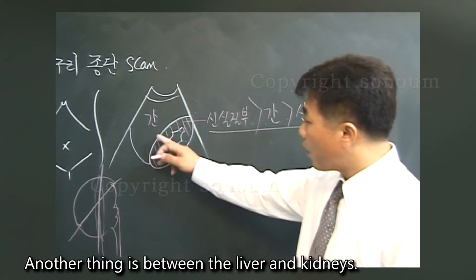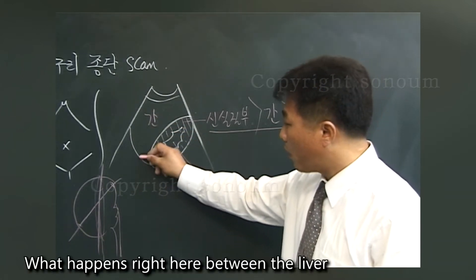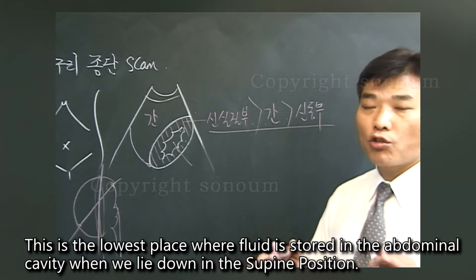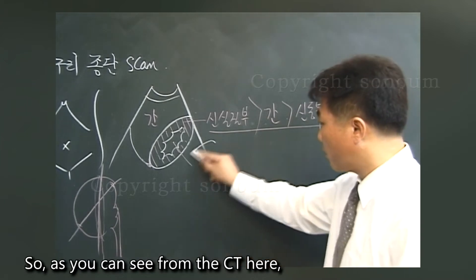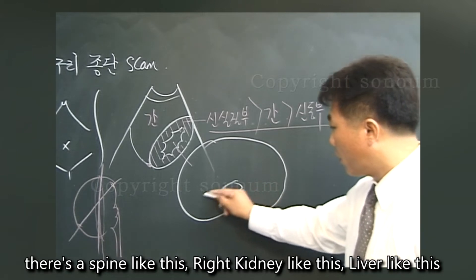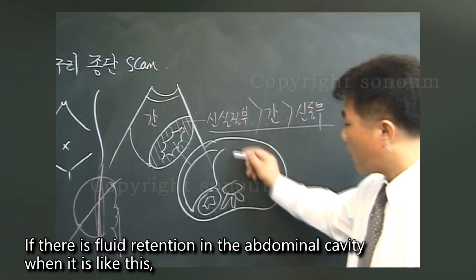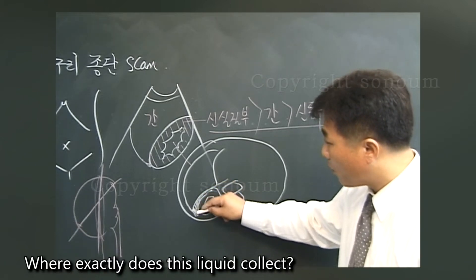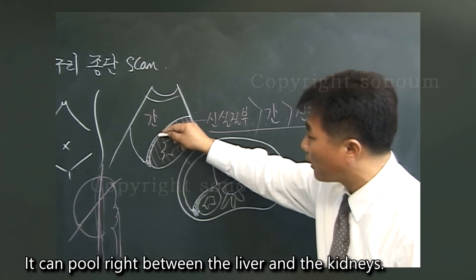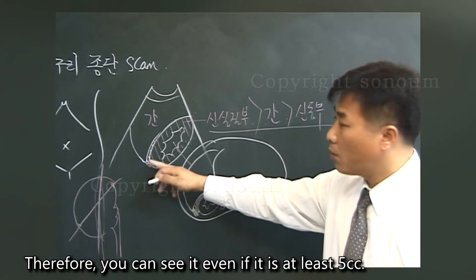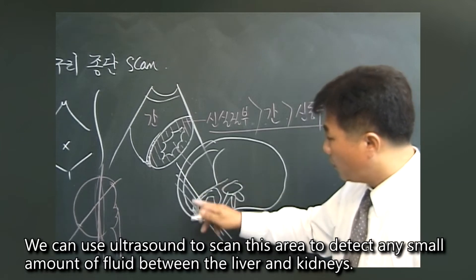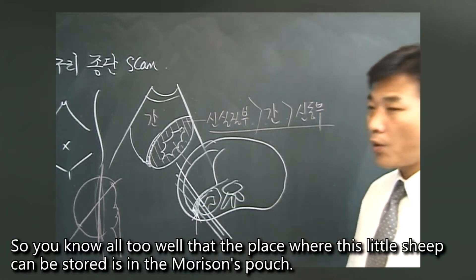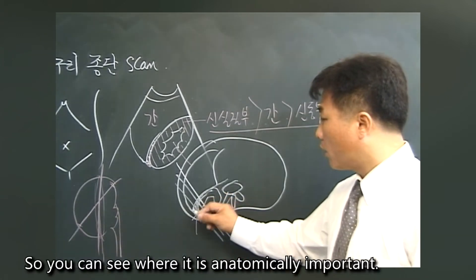Here's another important thing to know about echo. Between the liver and kidneys, what happens right here is the hepatorenal space. This is the lowest place where fluid is stored in the abdominal cavity when we lie down in the supine position. There is the spine, the right kidney, and the liver. If there is fluid retention in the abdominal cavity, it comes to the right area. The fluid collects right between the liver and the kidneys. You can detect it even if it is as little as 5cc.